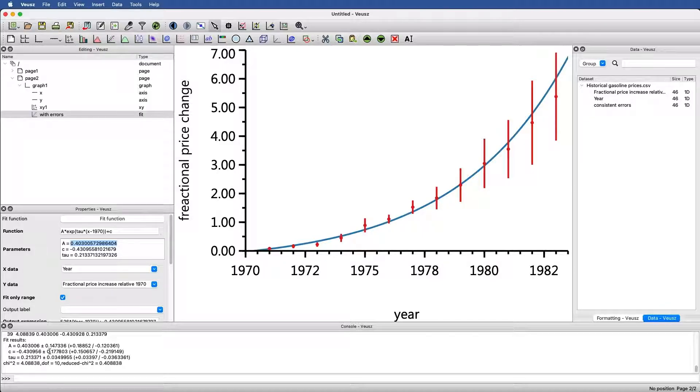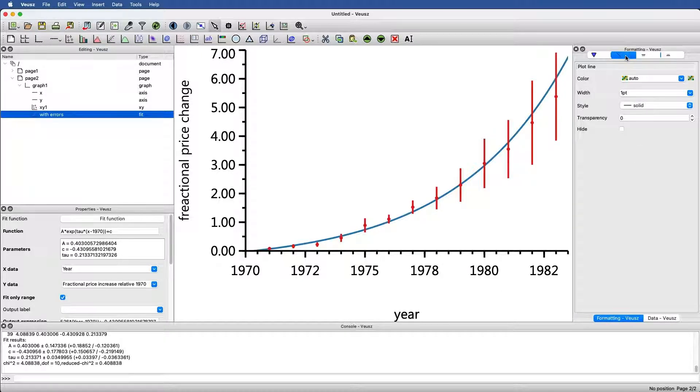You might imagine that basically what's happening is that we're expressing that the a could be slightly higher or lower, the c could be slightly higher or lower, the tau could be slightly lower. One way to represent that is to show those extremes. I think it's actually easiest to do with this fit line. If I look at the formatting, let's just make our lives easy and set this to a color that we like.